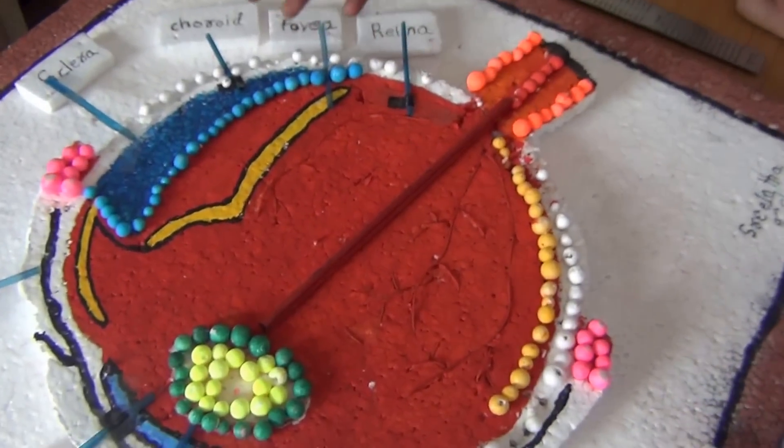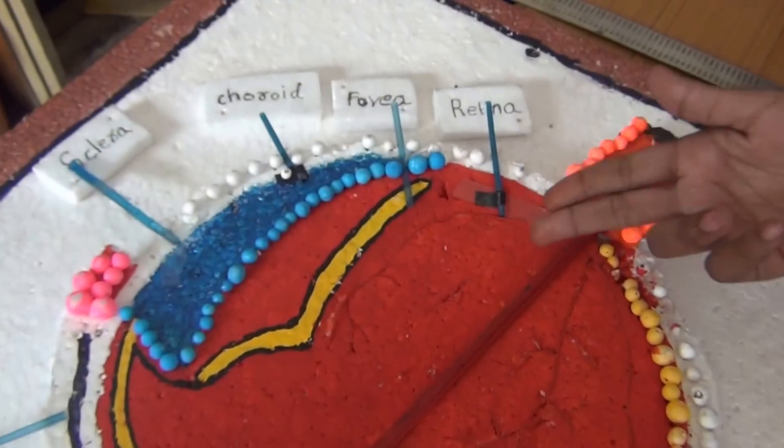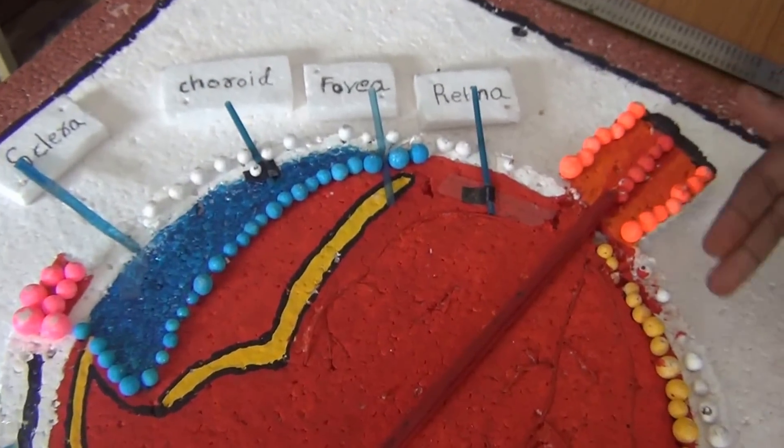The choroid layer is black in color and contains lots of blood vessels. Thank you.